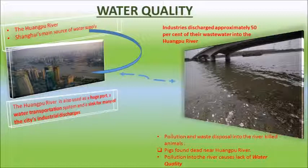Water quality is also a major issue in Shanghai and it all starts in the Huangpu River which is based in the city. The Huangpu River is Shanghai's main source for most of the city's water supplies. The river is a huge port, a water transportation system, as well as a sink for many of the city's industrial discharges. Industries usually discharge 50% of their waste water into the river, and the pollution which occurred kills animals — there were pigs found dead near the river. Pollution in the river causes there to be a lack of water quality.